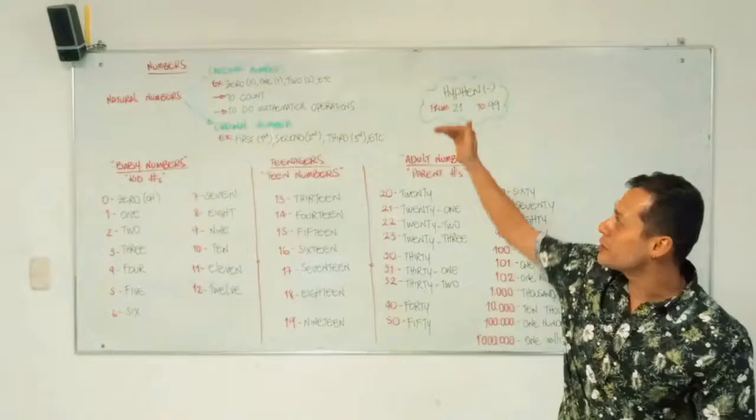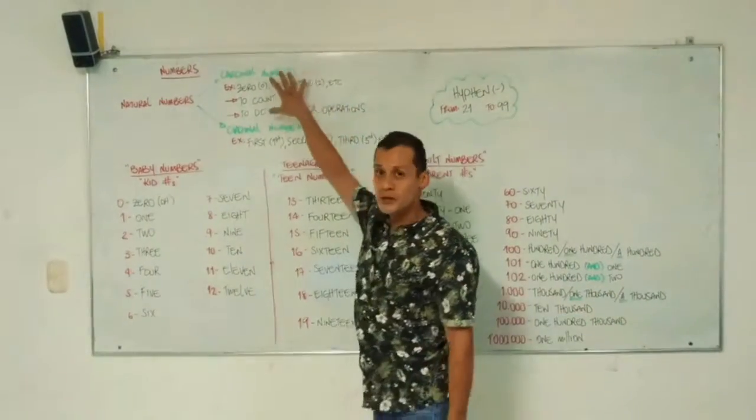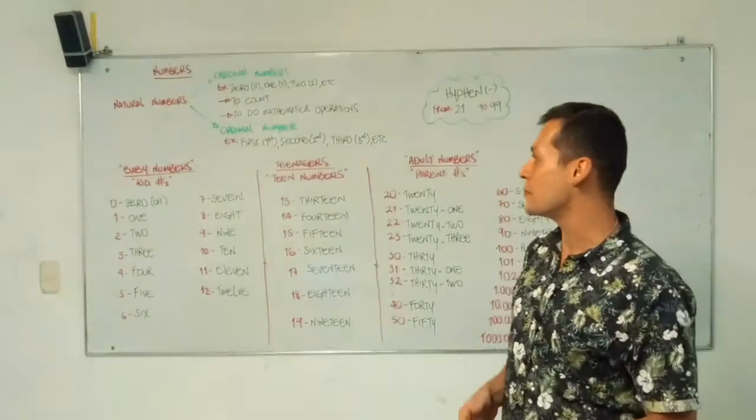Natural numbers are divided into big groups, which are cardinal numbers and ordinal numbers. Cardinal numbers are the ones that are most common for us, and we use them to count or to do mathematical operations.